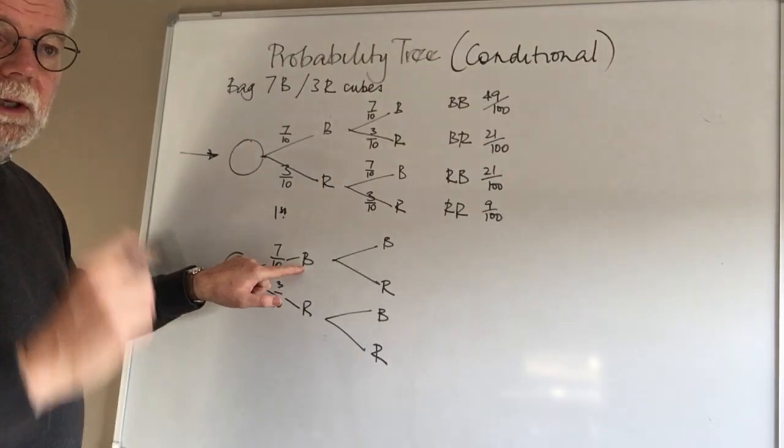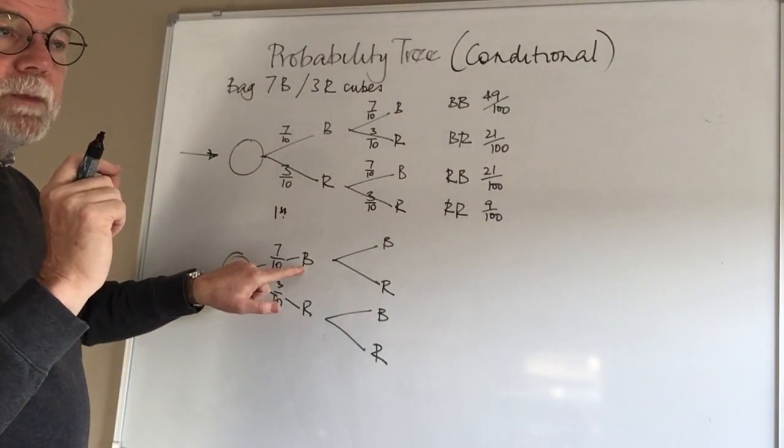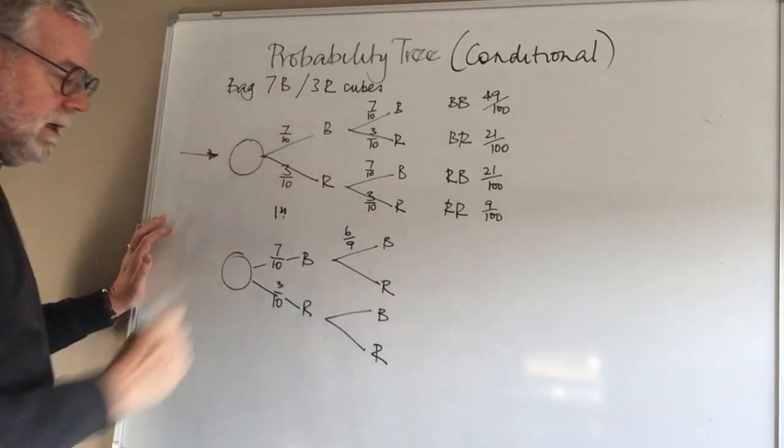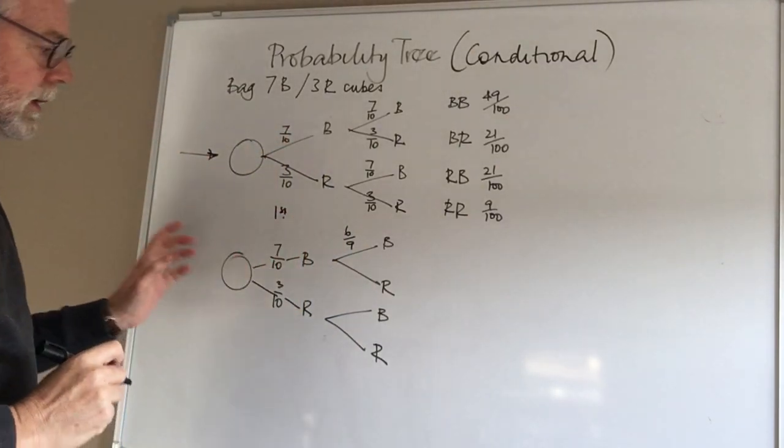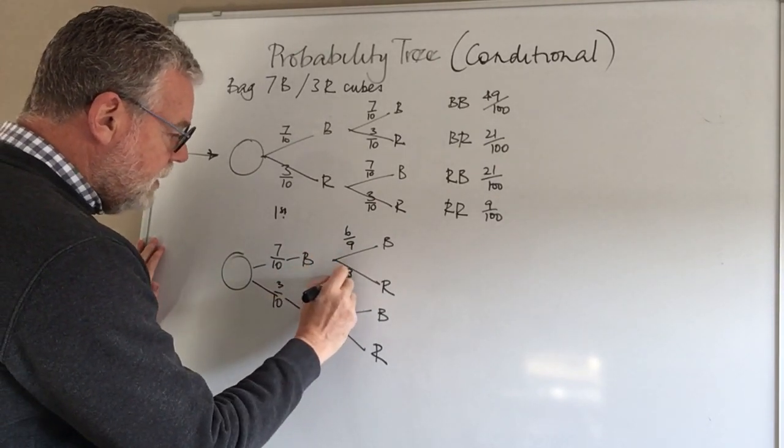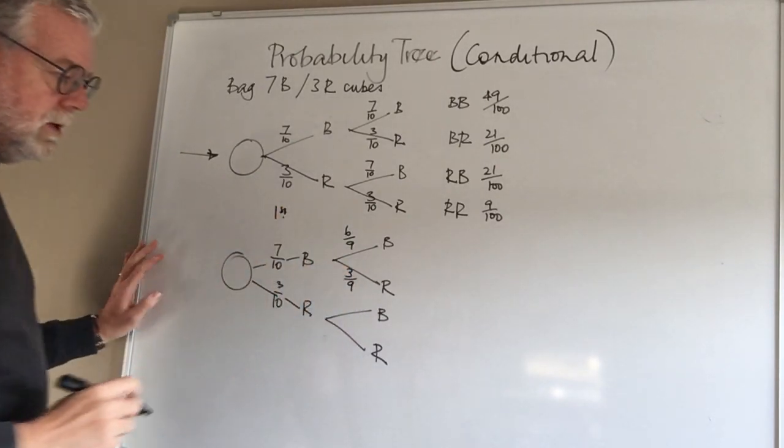If it was a blue cube, of course, we'd only have six ninths probability, wouldn't we, of getting a blue cube. The red would be unchanged, so we know we've got three. So that would be three over nine. Can you see how this works?